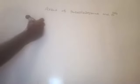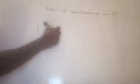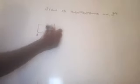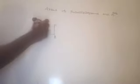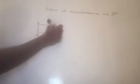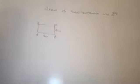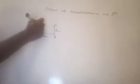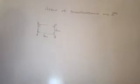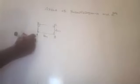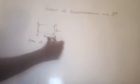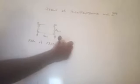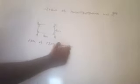Consider a rectangle ABCD in which two adjacent sides are 8 centimetres and 2 centimetres. The area of rectangle ABCD is the product of the adjacent sides, which is 8 centimetres into 2 centimetres, equal to 16 centimetre square.